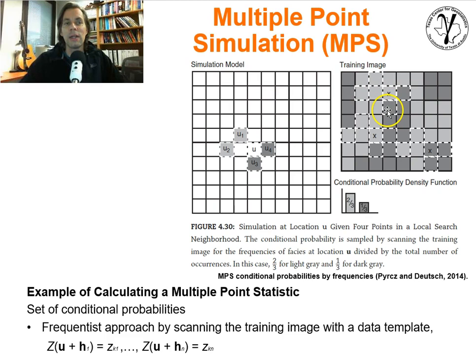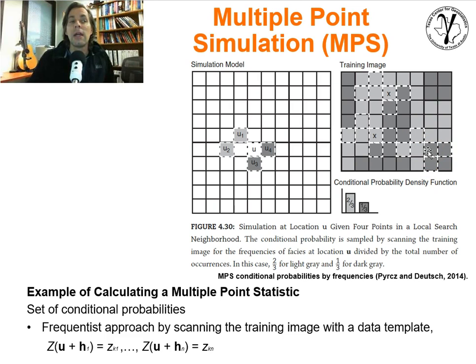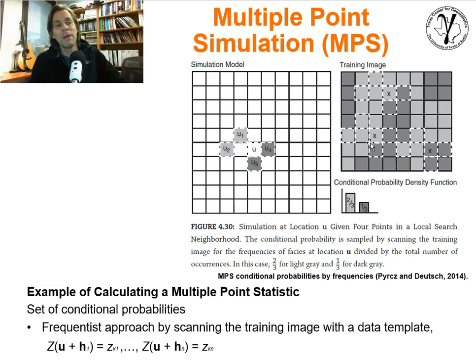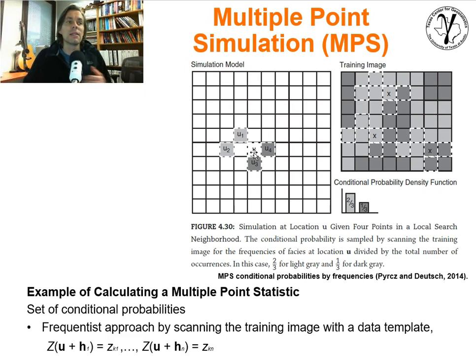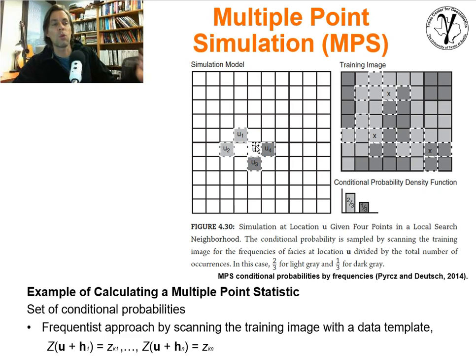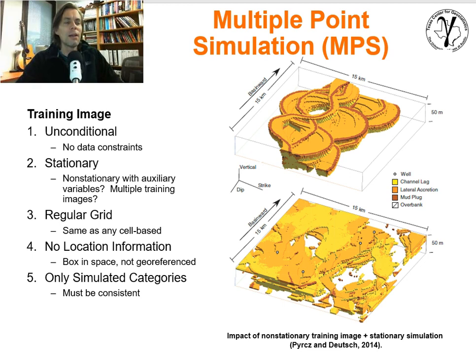Scanning the template through the training image, you find perhaps three locations that have that pattern. You put on your frequentist hat and count: the first match has light gray at the unknown location; the second match also has light gray; the third match has dark gray at the unknown location. So three occurrences of this pattern — one time out of three, dark gray; two times out of three, light gray. The conditional probability distribution at this unknown location is two-thirds light gray, one-third dark gray. From MPS scanning with a template, we calculate a local conditional PDF that we can sample from via Monte Carlo simulation, place in the grid, and work sequentially, just like sequential Gaussian simulation.